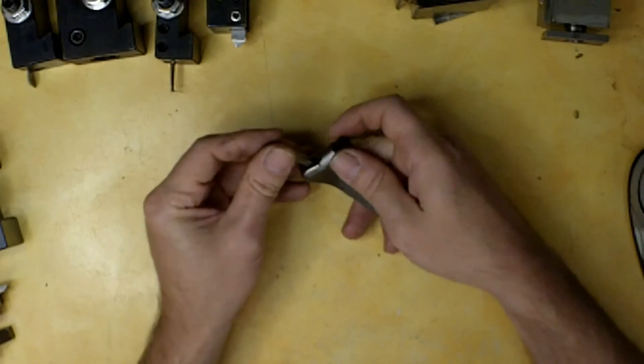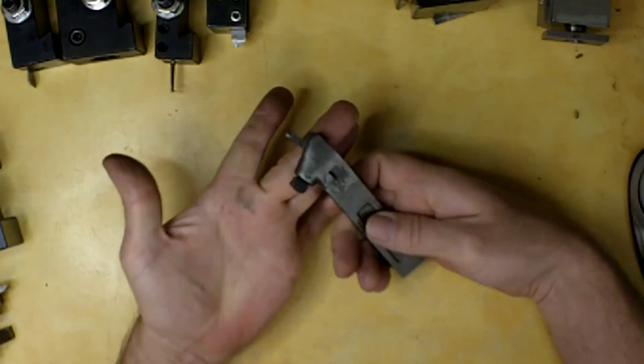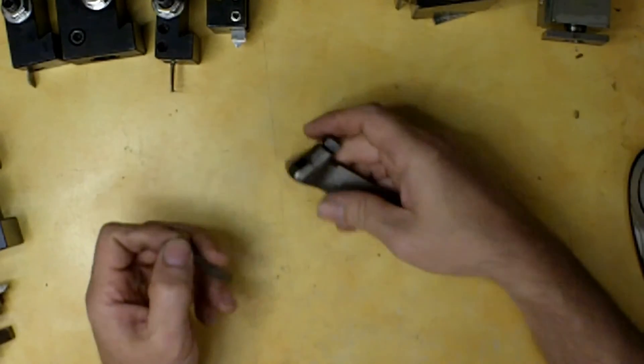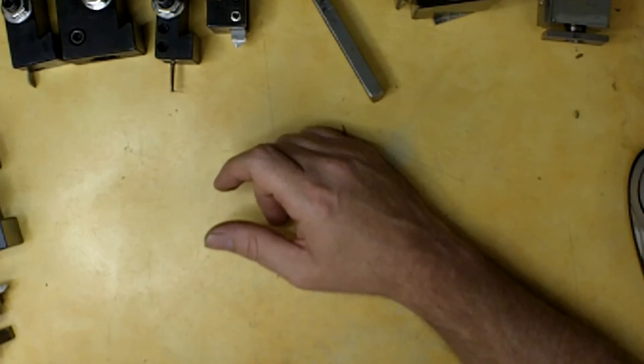Anyway, this is not the right size bit for it, but it'd be held in like so and locked down right here. So again, this is just a little information on different types of tool holding, tool bit holding for working on your lathe.